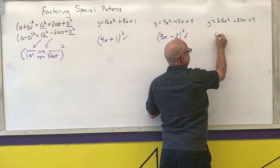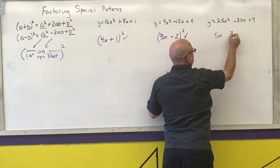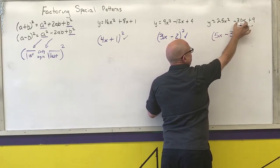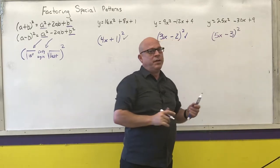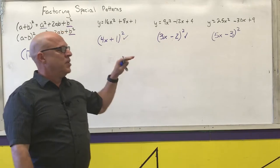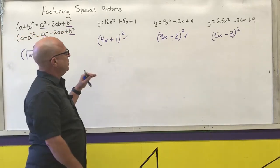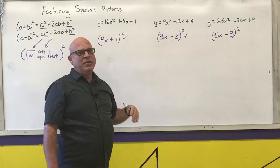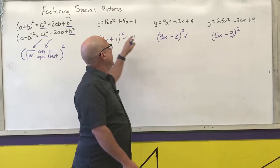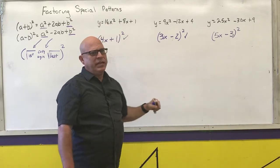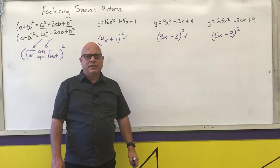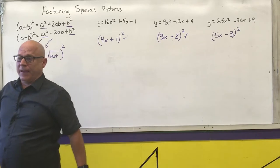For the third: square root of the first is 5x, square root of the last is 3, copy the negative sign — giving 5x minus 3, quantity squared. Negative 15 times 2 is negative 30, so my middle term checks. Please check those middle numbers — there will be times that the middle number does not match. If it doesn't match, you'll have to go back and use another method like grouping or factoring by inspection.